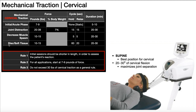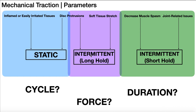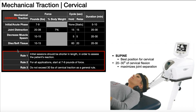For disc protrusions and stretching soft tissue, remember this would be more of a long hold. We're going to apply anywhere between 10 and 15 pounds of force. The hold is longer — we're going to hold for 60 seconds, and then relax for 20 seconds. The total treatment duration will be about 20 to 30 minutes.